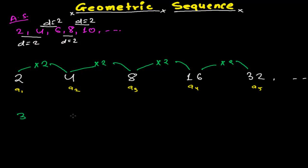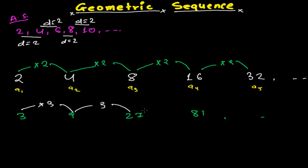Let me take one more example. Suppose I have 3, 9, 27, 81 and so on. Here, multiplying the first term by 3 gives the second term; multiplying the second term by 3 gives the third term; and multiplying the third term by 3 gives the fourth term. Everywhere we are multiplying by 3.